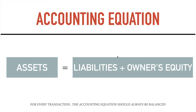For every transaction, the accounting equation should always be balanced. So you might ask: paano kapag si liabilities yung nasa kabilang side ng equal sign? So kung nasa kabilang side ng equal sign si liabilities, magiging: liabilities equals owner's equity minus asset.